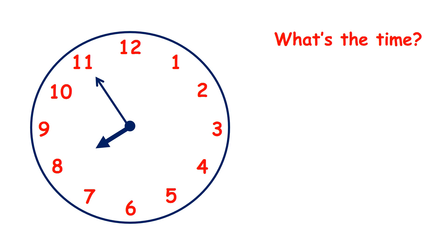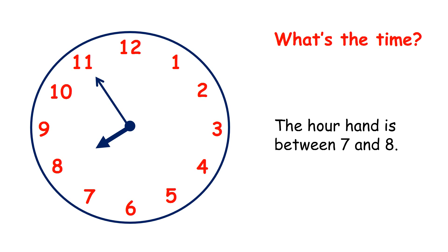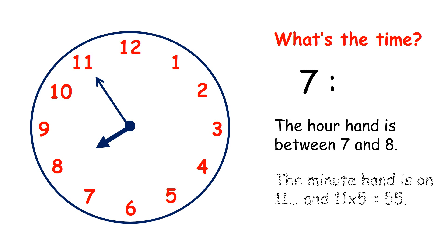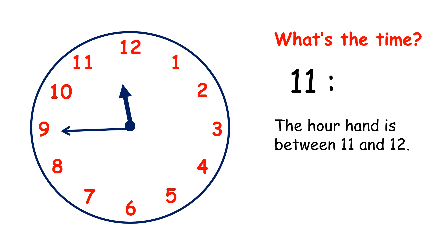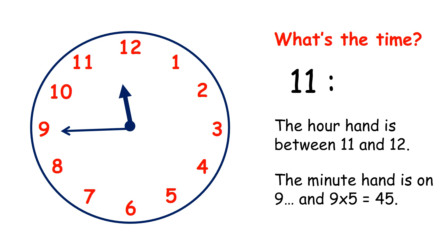And what's the time here? Well, the hour hand is between 7 and 8 — it's very close to 8 but hasn't quite reached 8 yet, so it's 7 something. And the minute hand is on 11, and 11 times 5 is 55, so the time is 7:55. And what time does this clock show? Well, the hour hand is between 11 and 12, so it's 11 something. And the minute hand is on 9, and 9 times 5 is 45, so the time is 11:45, which we can also say is a quarter to 12.